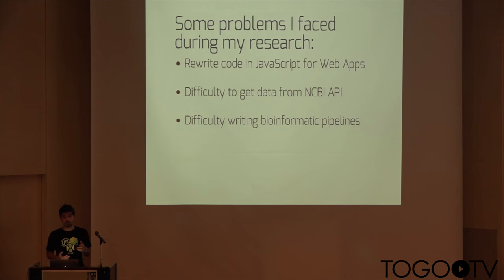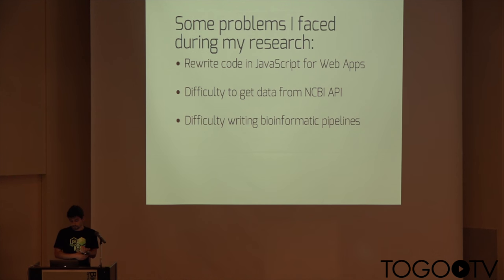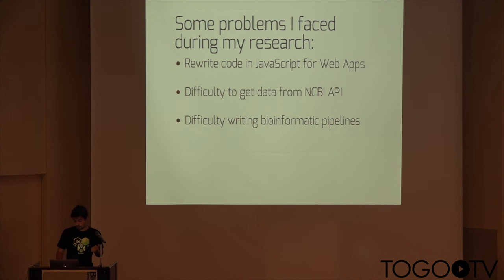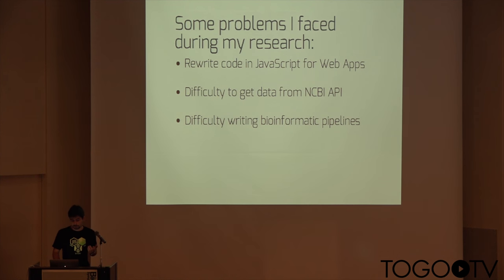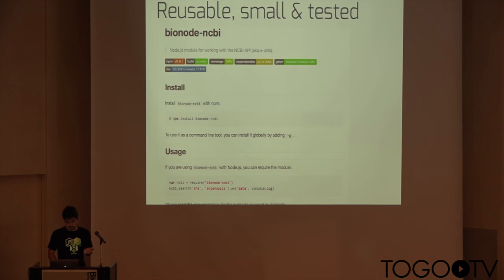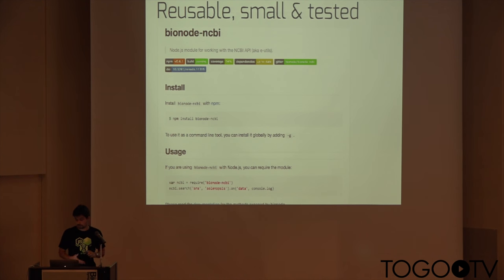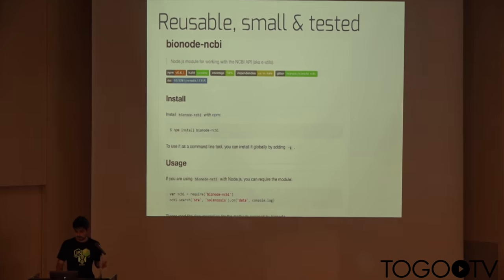So I decided to just write my code in JavaScript and be able to run it everywhere. Another issue I had was that I had to download a lot of datasets from NCBI, and the API was not user-friendly. I also had some issues writing bioinformatics pipelines that were flexible enough for what I was trying to do. So I just started writing some scripts, those scripts evolved into modules, and I started pushing them to GitHub, following best web development practices — continuous integration, testing — and started getting pull requests.